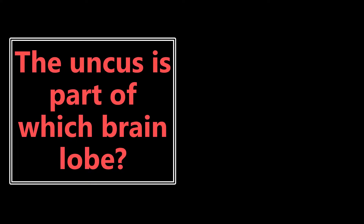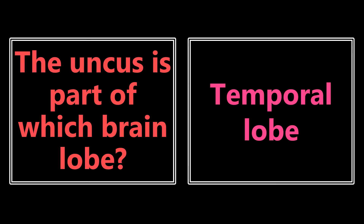The uncus is part of which brain lobe? In emergency medicine we talk about uncal herniation, but we also want to know where the uncus is — it is part of the temporal lobe. Really important to know. A little factoid that you may see on test day.